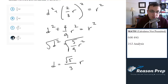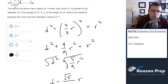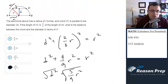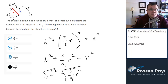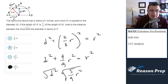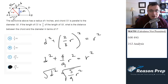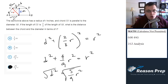And that would be choice D. On second thought, plugging in might not be too bad — you just pick an r, like r = 9, which means AB would be 9, CD would be 6, and then you could solve for d. Then you plug 9 into your answer choices and see which one matches what you got for d. So it's not too bad, but either way you should know how to do it both ways — plugging in and algebraically.